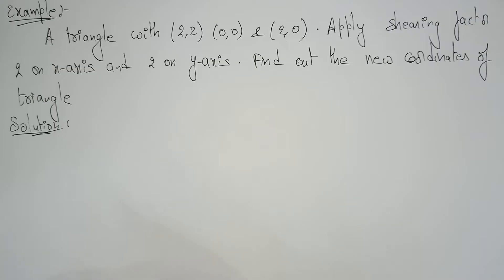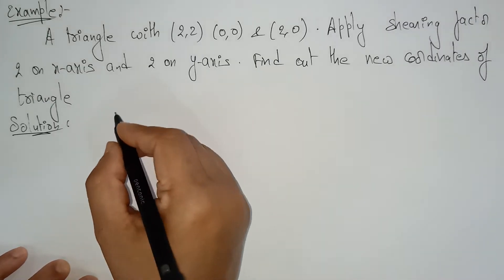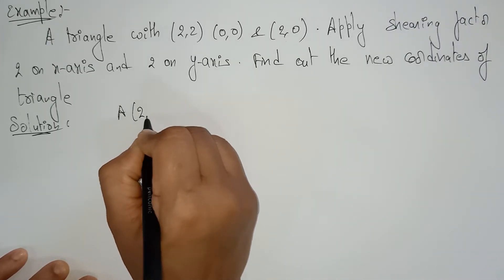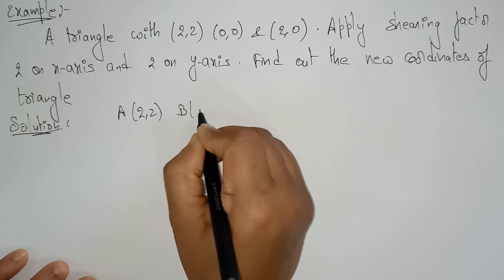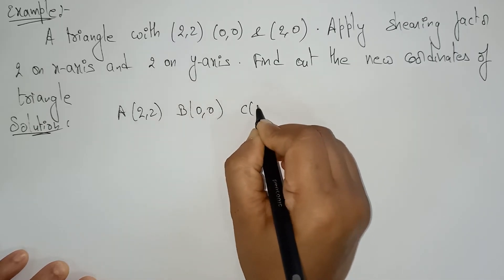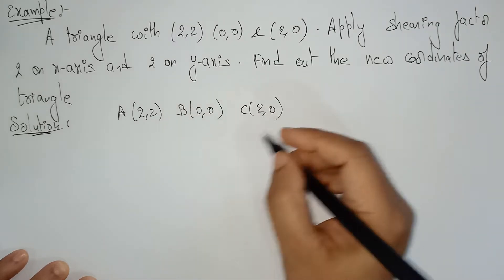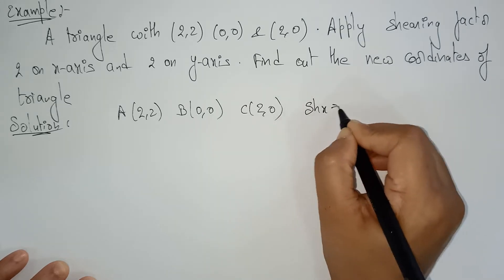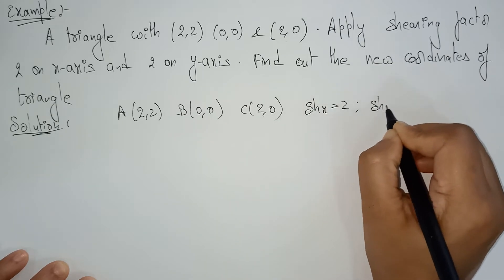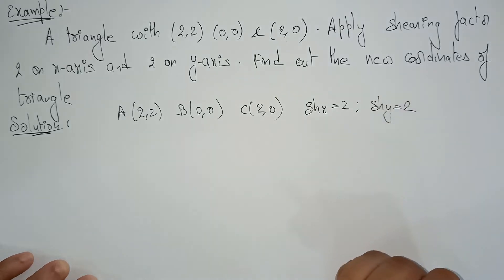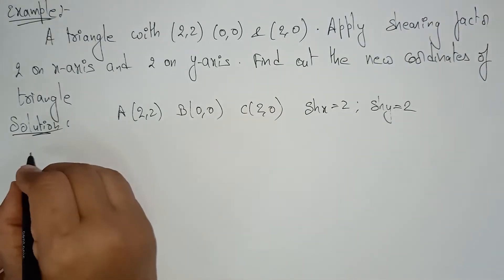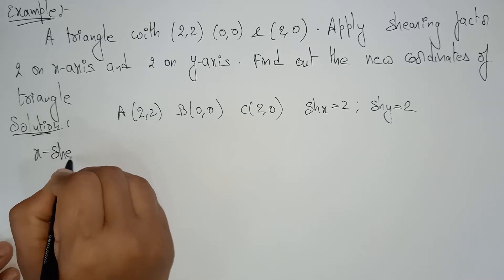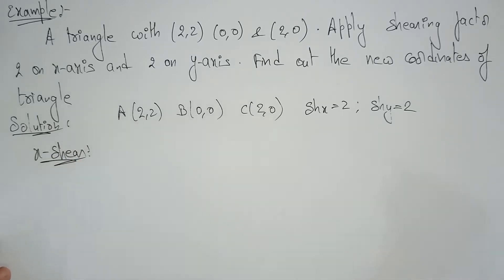Let's apply the formula to find the new coordinates after shearing. Take A as (2,2), B as (0,0), and C as (2,0). The shearing factor along the x-axis SHx is 2 and SHy is also 2. Now let's work on the x-shear first. If you want to shear the object in the x-direction, you can shear the object either in x or in y.